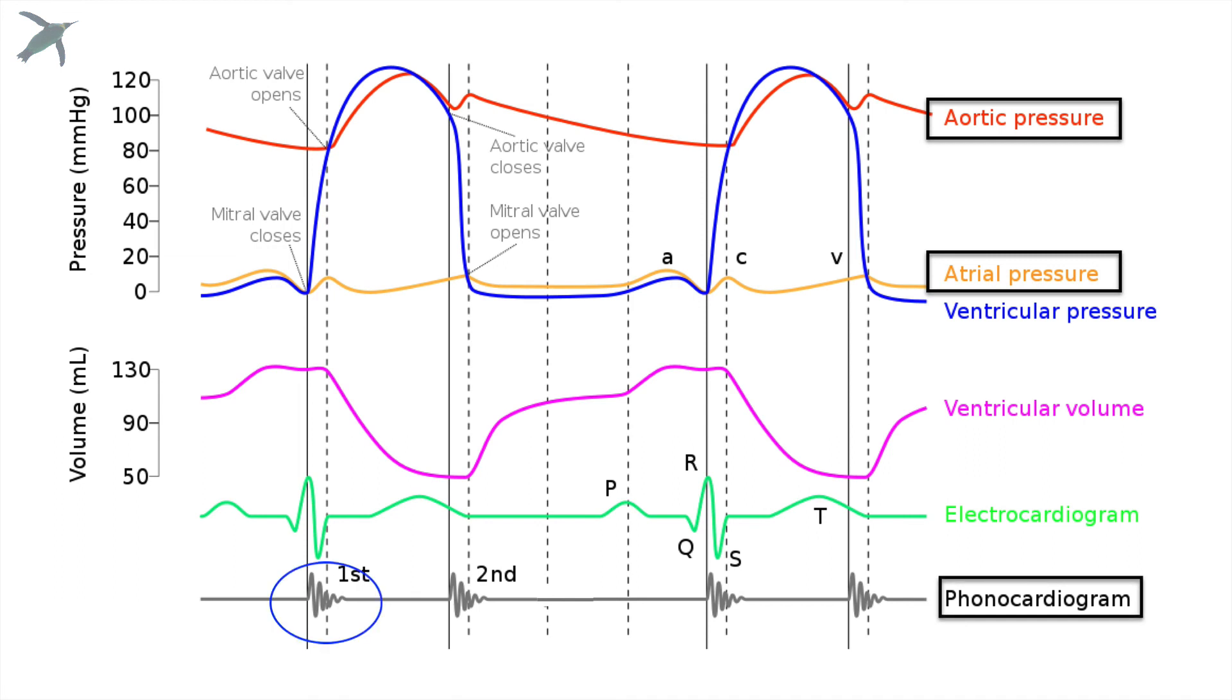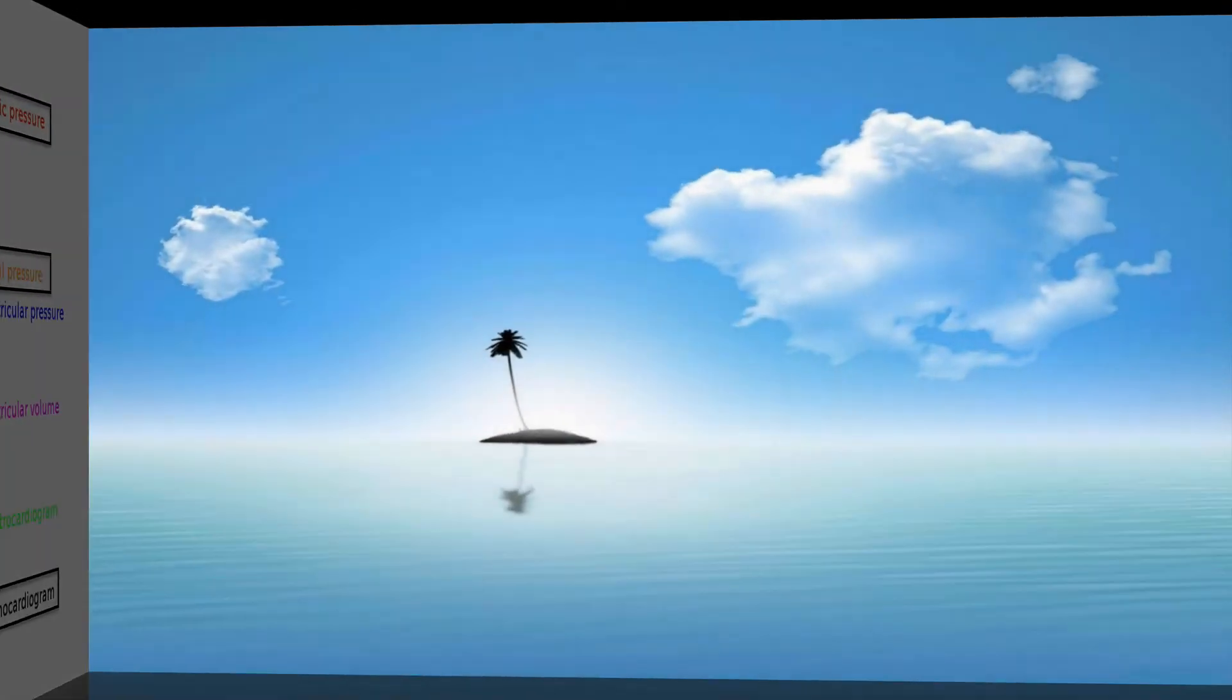And we have the atrial pressure, which really does not ever get that high, and the heart sounds. The first sound we call S1. That's the shutting of the mitral valve. The second sound, S2, is the closing of the aortic valve. Your Wiggers may also show S3 and S4. Those are abnormal heart sounds.